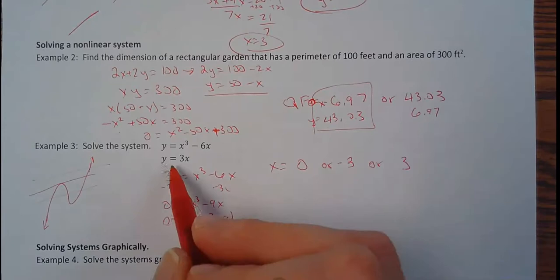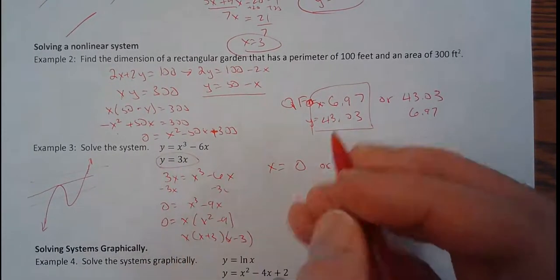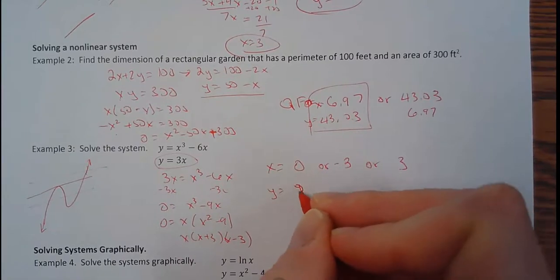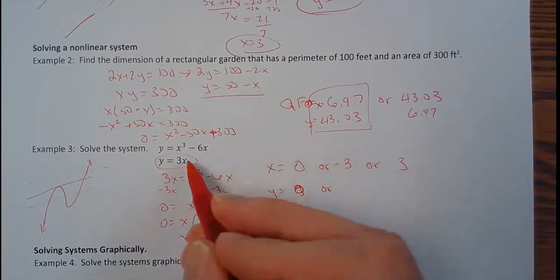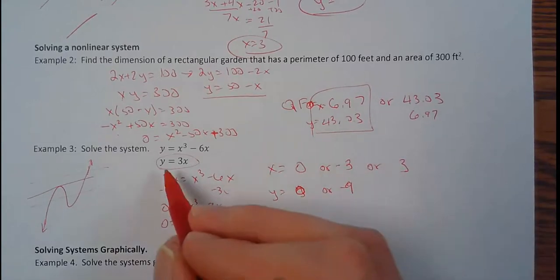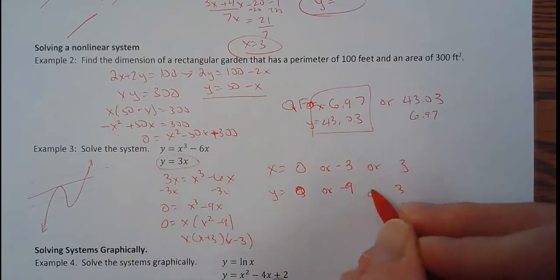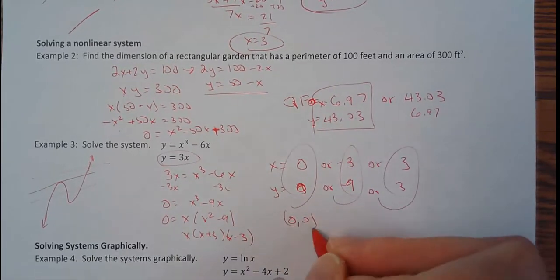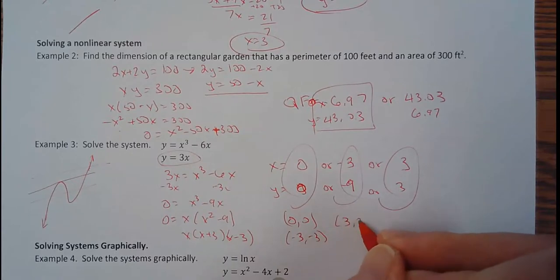And then, to find the y that goes with it, I'm going to use this equation right here. So if I plug 0 in, if x equals 0, then y equals 0. If x equals negative 3, y equals negative 9. If x equals 3, y equals 9. So these are the ordered pairs that go together: 0 comma 0, negative 3 comma negative 9, 3 comma 9.